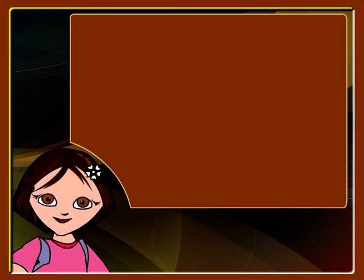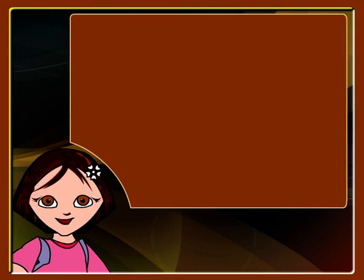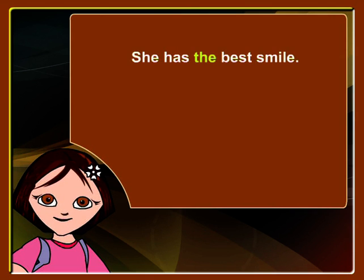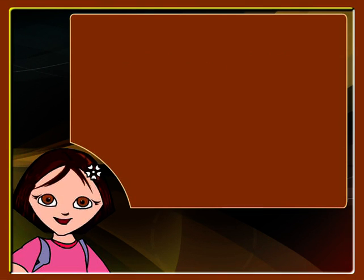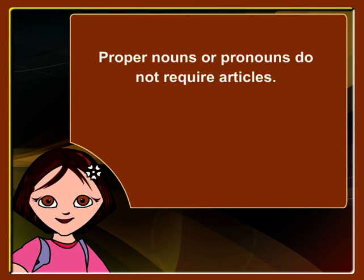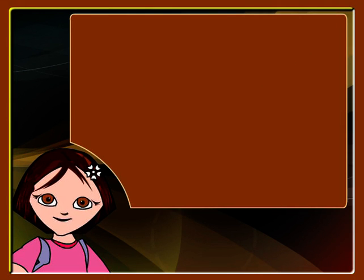Let's look at another sentence. 'She'll wear the dress her father bought for her.' In this sentence, THE is an example of a definite article. Some more such examples: 'I have read the book she bought.' 'She has the best smile.' 'I love the sandwiches he makes.' 'He has gone to Tokyo.' As a rule, no article is used in this sentence since proper nouns or pronouns do not require articles. Tokyo is the name of a place and a proper noun.